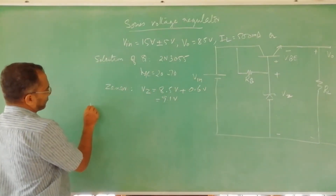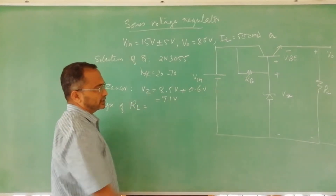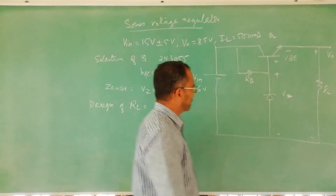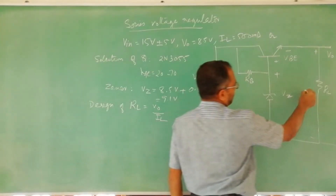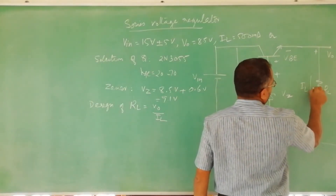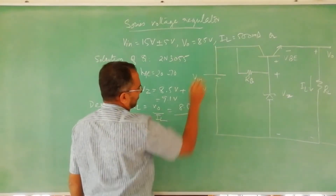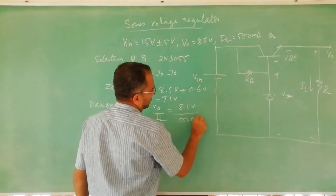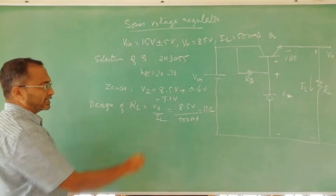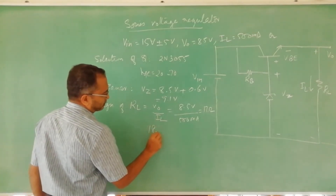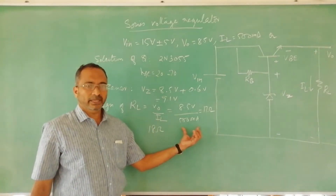Now we design RL. Using Ohm's law, RL equals VO divided by IL. VO is 8.5 volts and IL is 500 milliamperes, giving approximately 17 ohms. We select a standard value of 18 ohms.